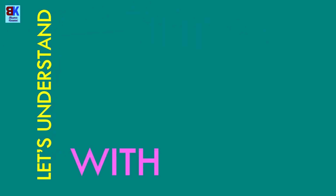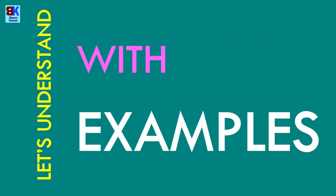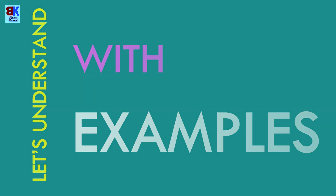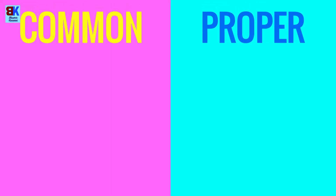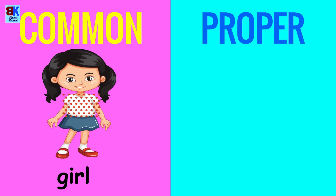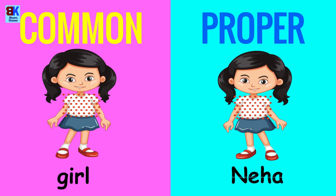Let's understand with examples. A girl is a common noun because it's a general name given to a person. The general name becomes proper when we give this person a specific name — in this case, Neha. Neha is a proper noun given to a person.